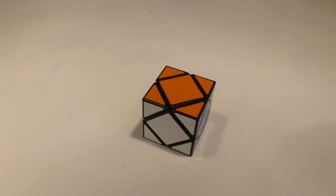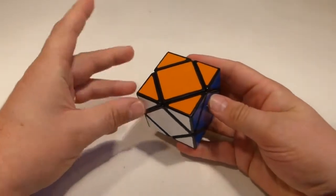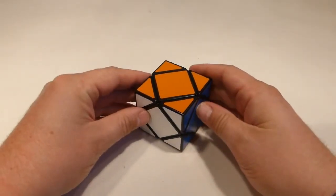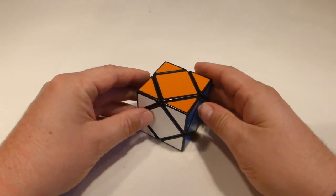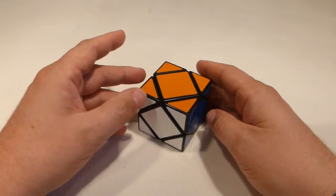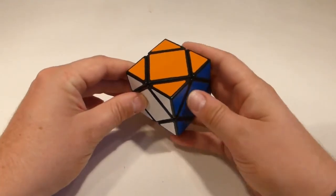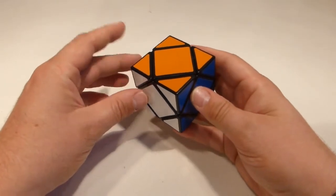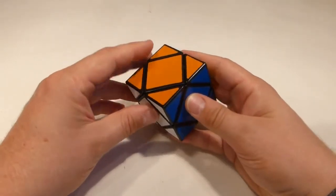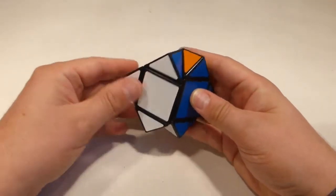Now the Skewb is a really interesting puzzle in that the standard Rubik's Cube has a six-arm core, so you've got six faces and each of those things rotates. Well, here we've got a four-arm core, and so what that means is the rotation turns out that when you're turning this thing, you're actually turning half the puzzle.